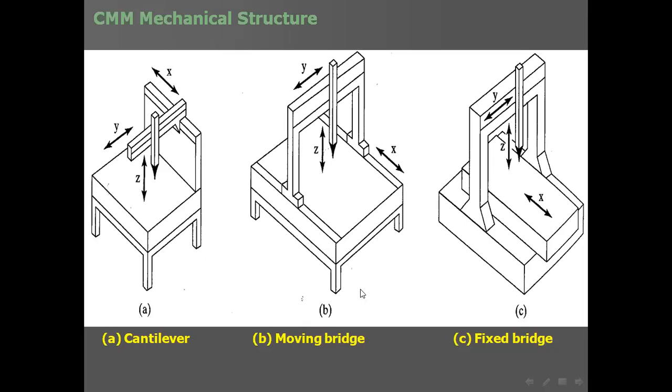The second configuration is the moving bridge type — the entire bridge moves for the X direction, with the probe sliding for Y and moving up and down for Z.